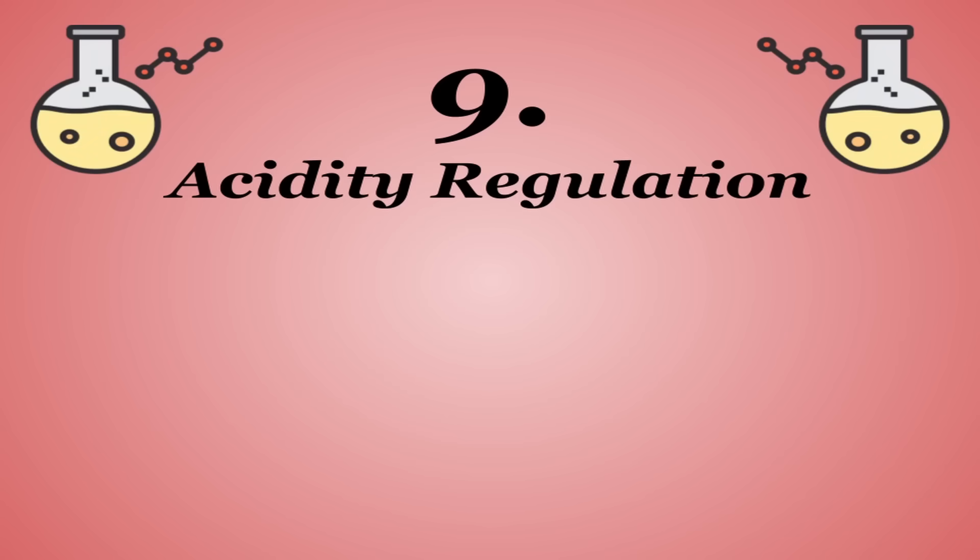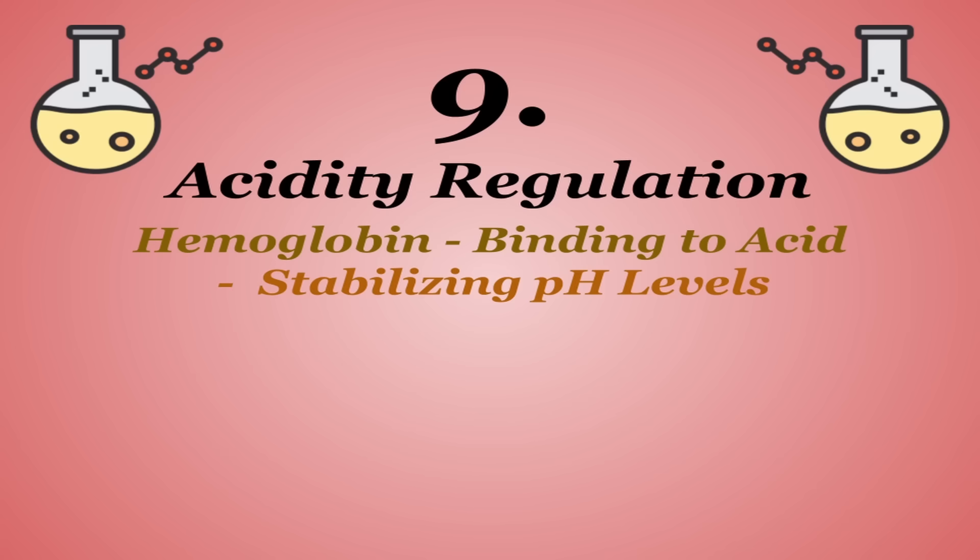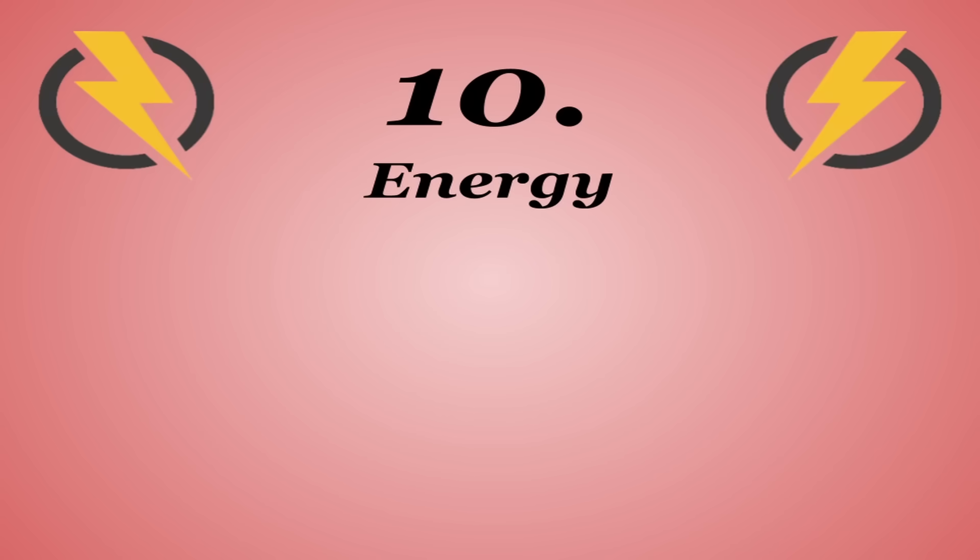Number nine is acidity regulation, with proteins like hemoglobin binding to acids, helping to stabilize your body's overall pH levels. And lastly, protein can be used for energy, but it is kind of a last resort and is really only used when other energy sources like carbohydrates have run dry.